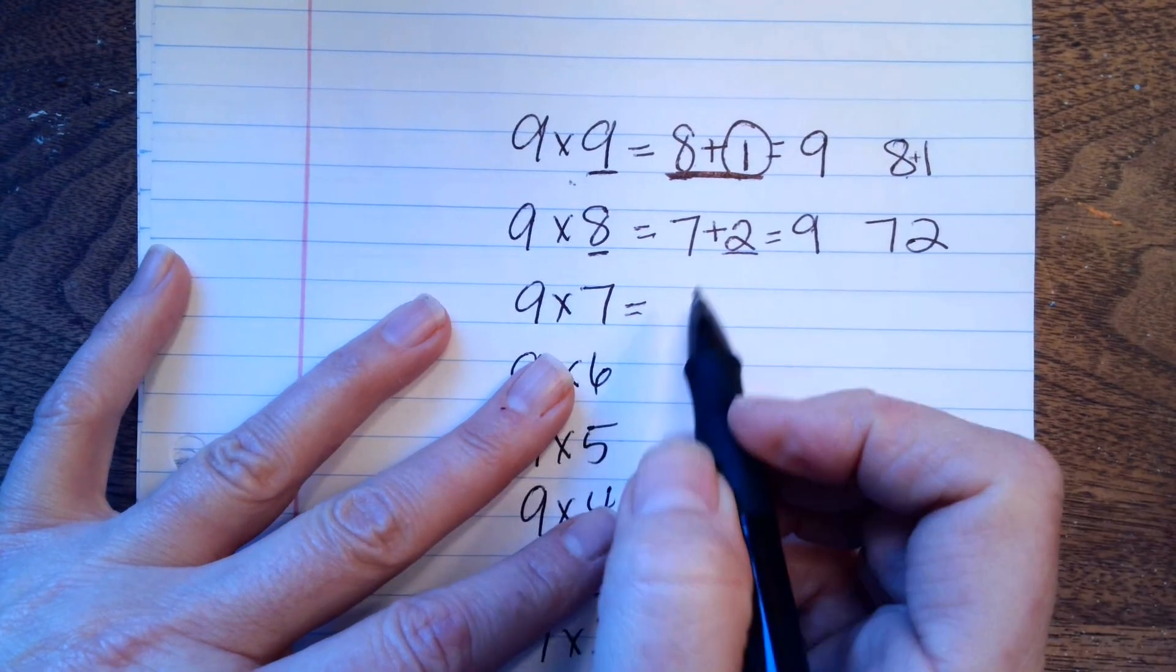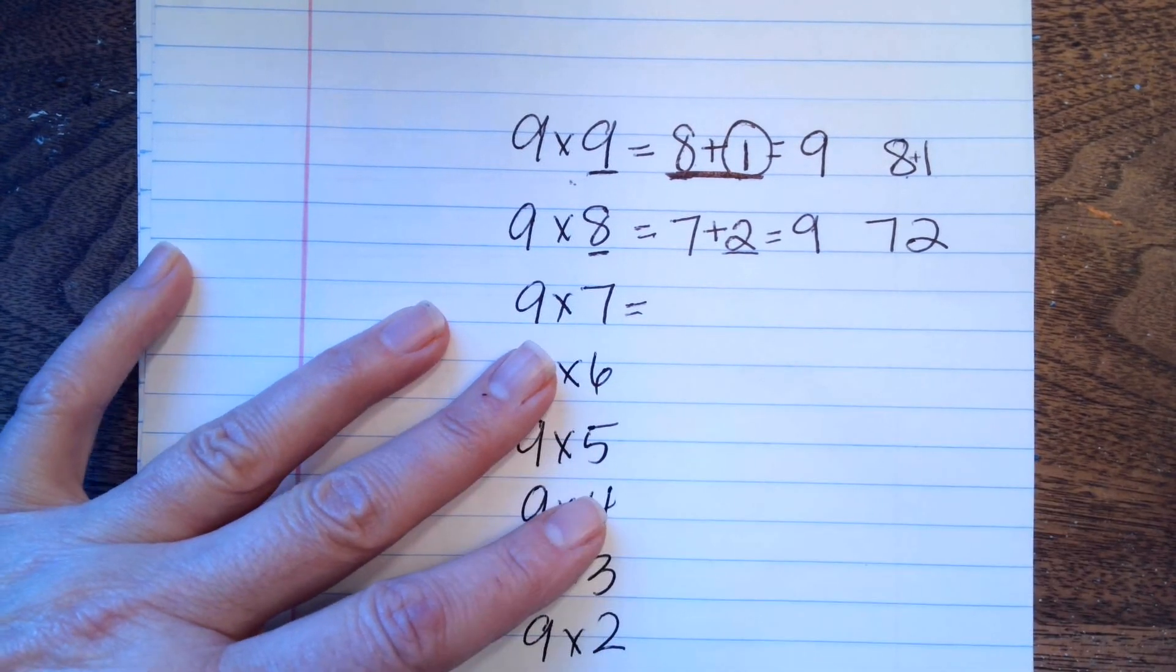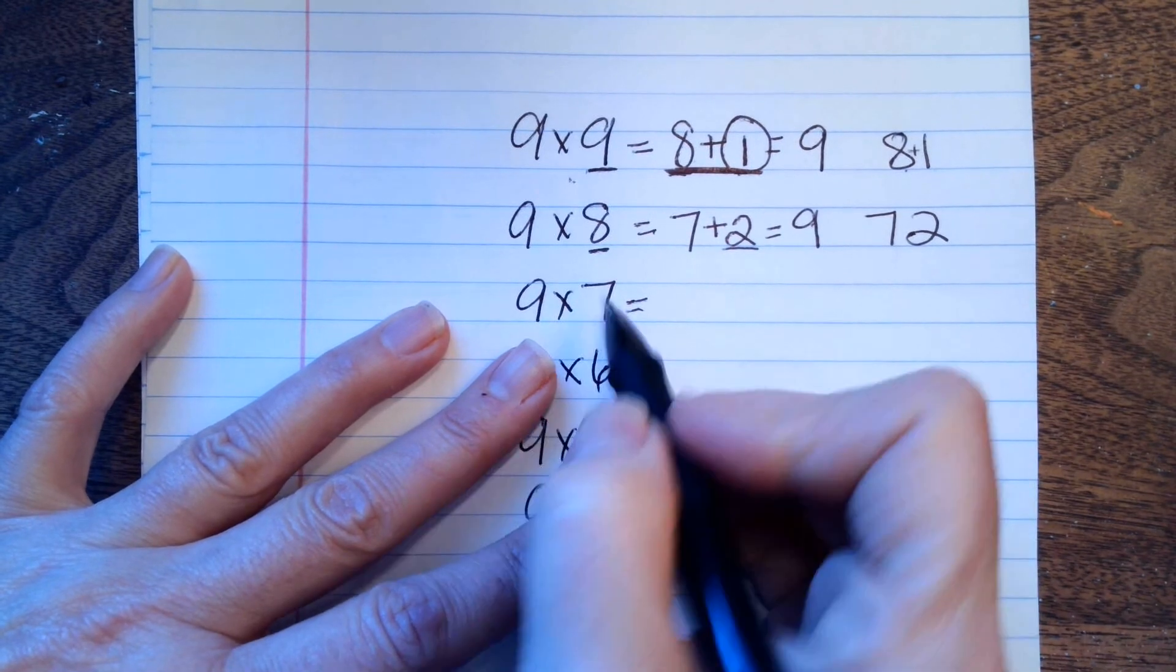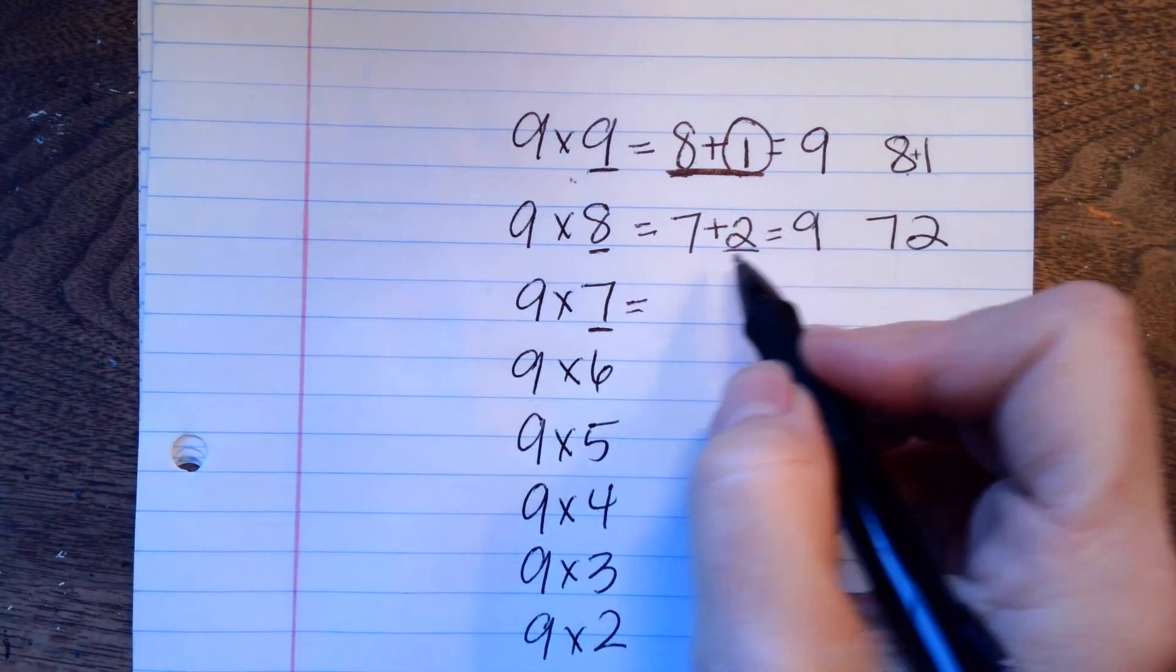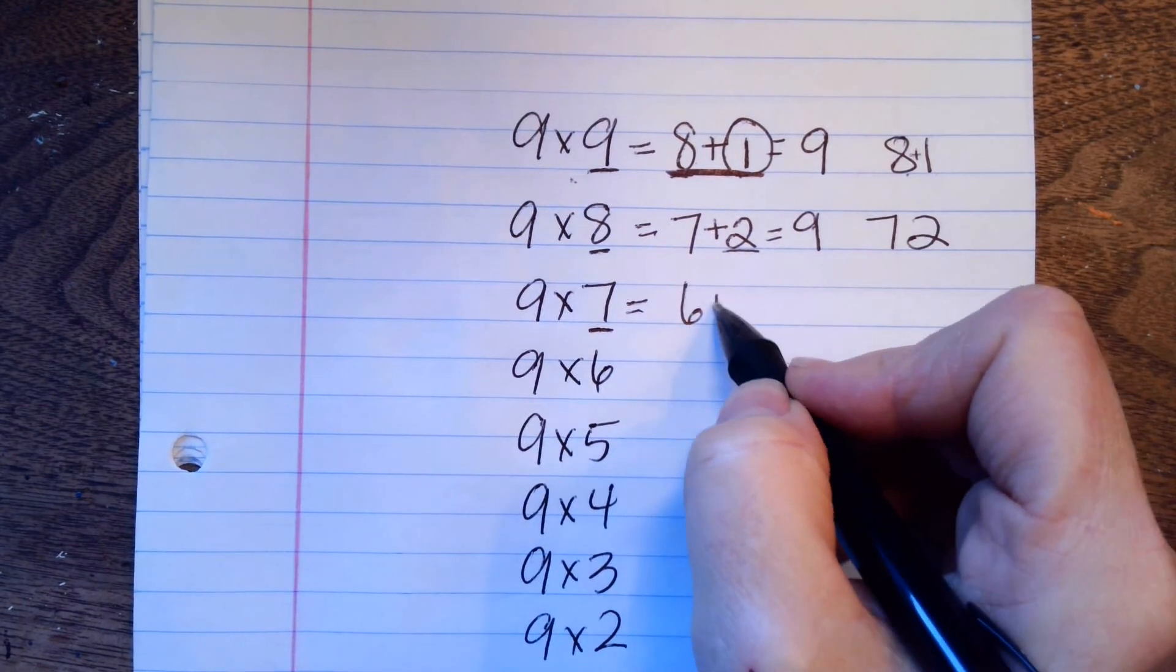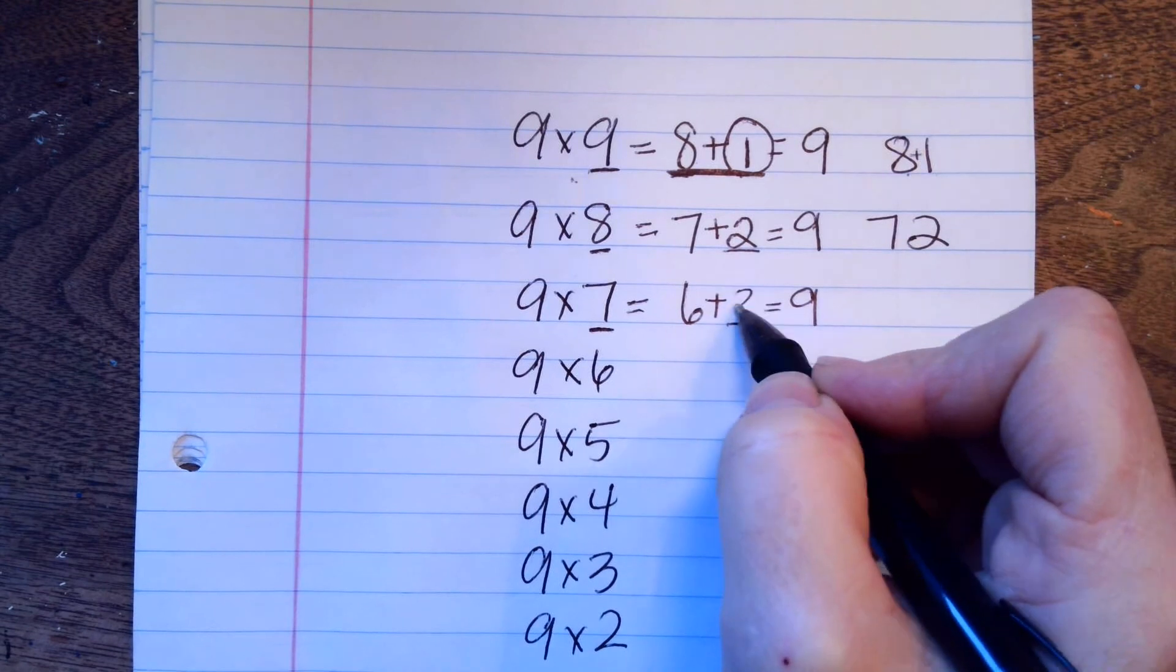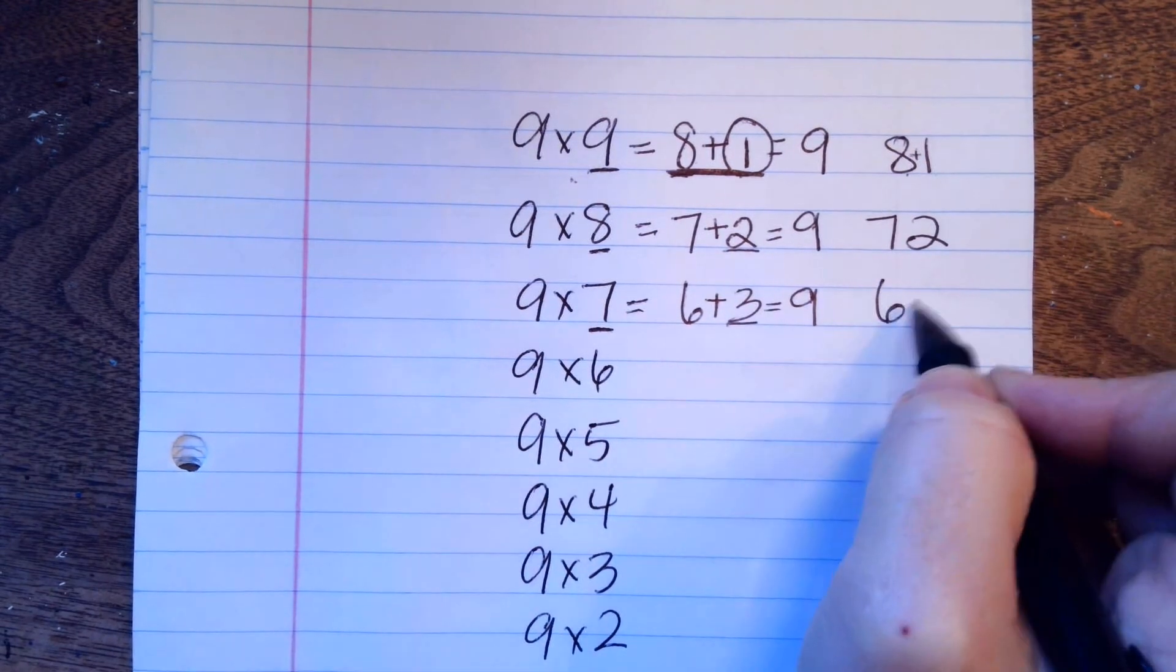So, I'm sure you don't get it, but I get it and I think it's cool and you'll get it in like 3 weeks. So, we're going to underline the 7. 7 minus 1 is 6. 6 plus something equals 9. 6 plus 3. The answer is 63.